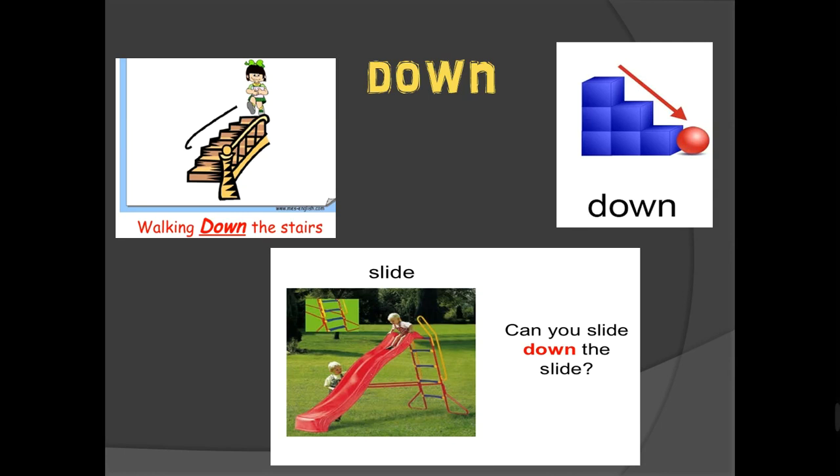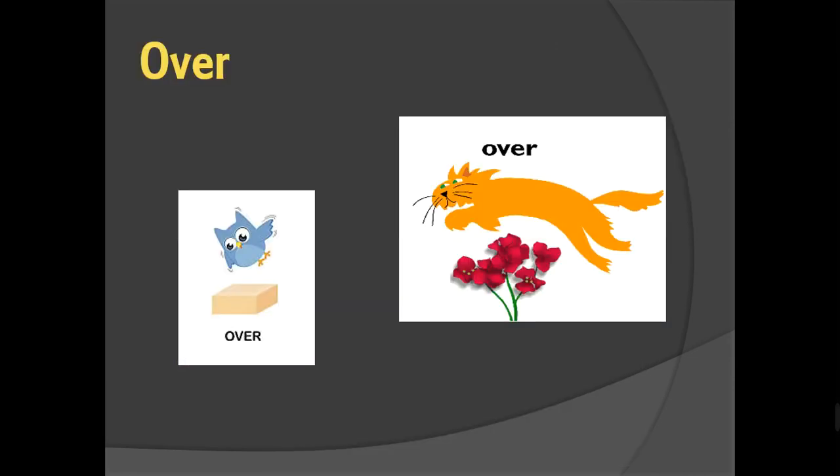Next, we have the word over. Over, like what you see in the picture now. The cat jumps over the plant or over the flowers. It's up, but it jumps over, maybe without touching the plant. Like the bird here is flying over the blocks.